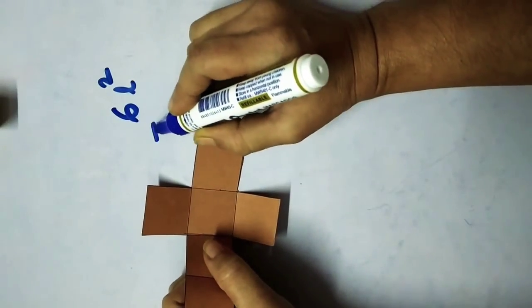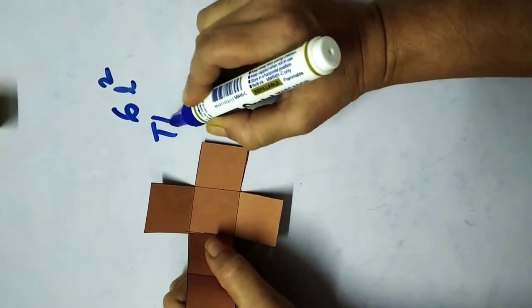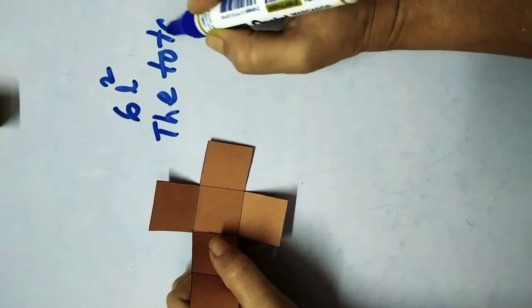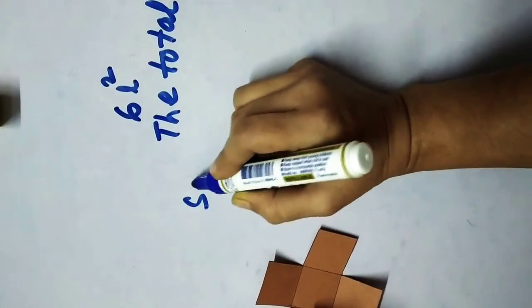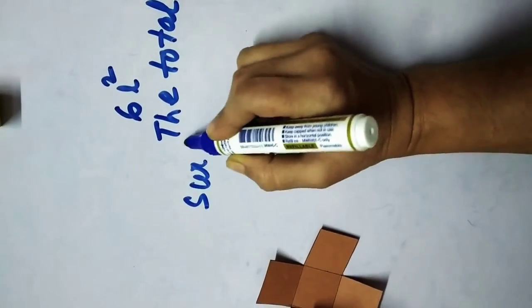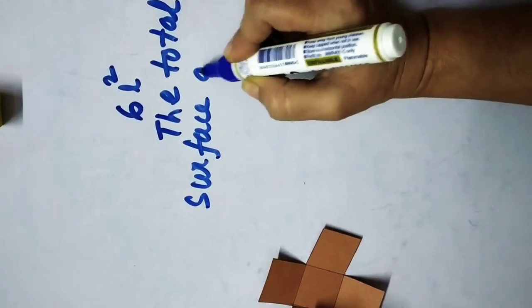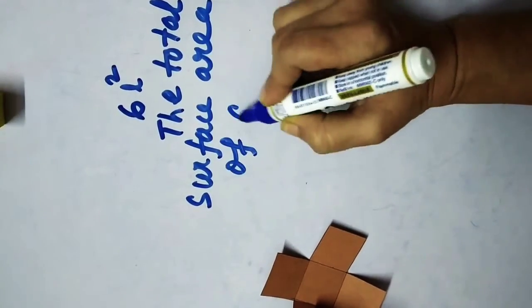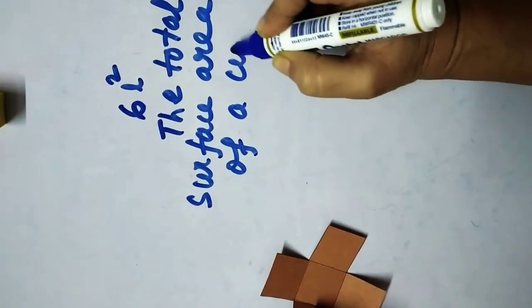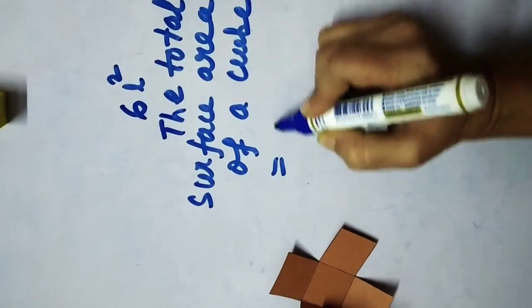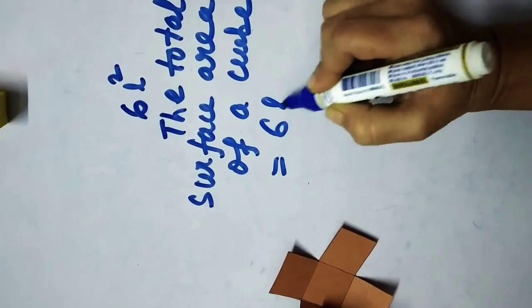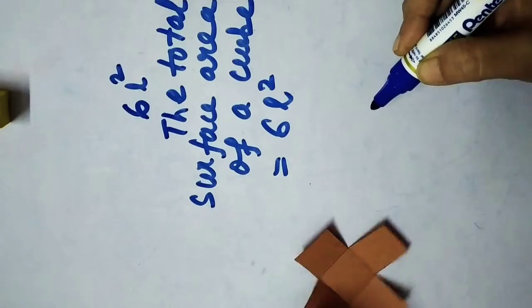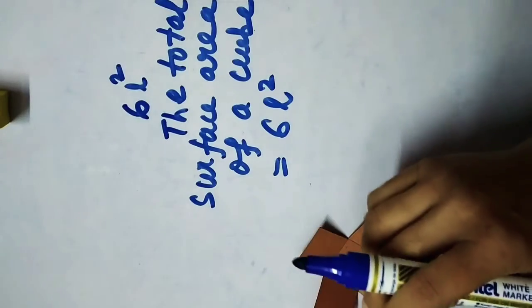The total surface area of a cube is equal to six L squared.